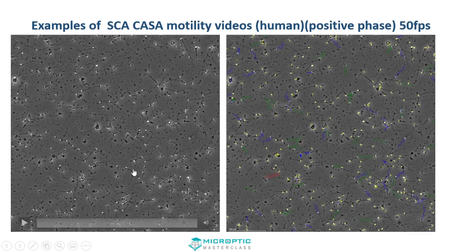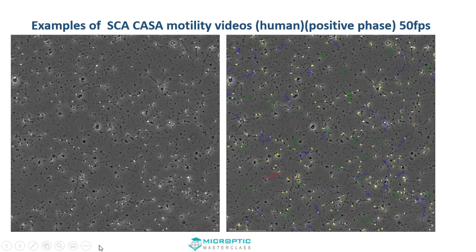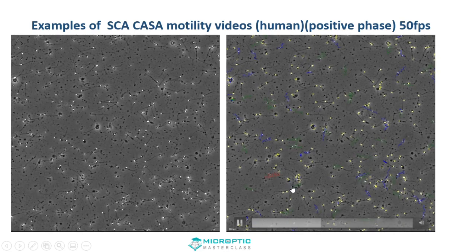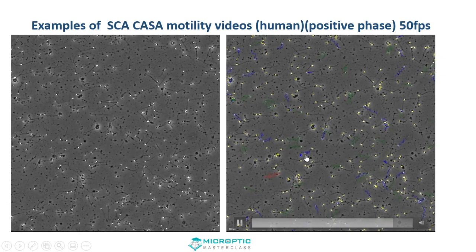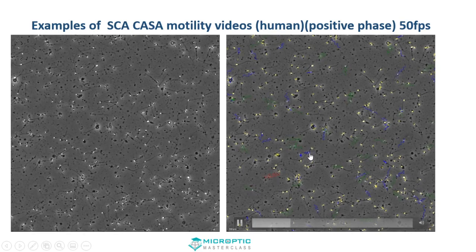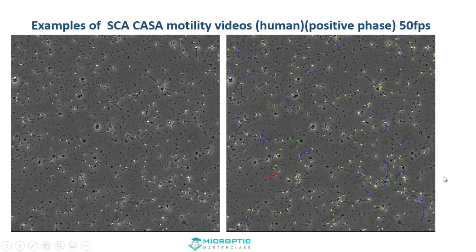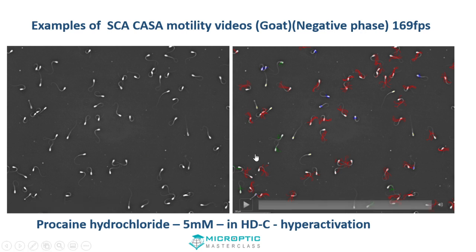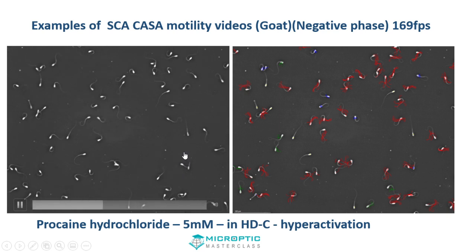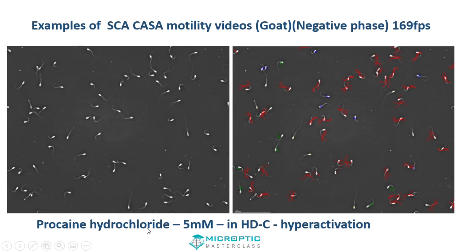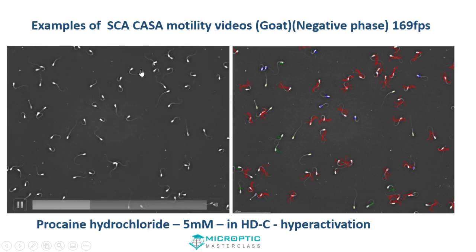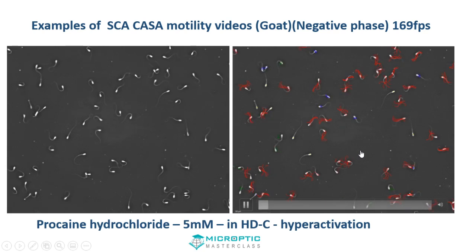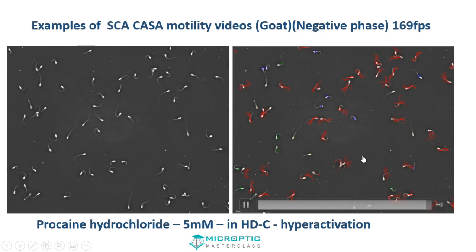Let's first look at motility of human sperm in semen. You can see the sperm swimming in a pretty challenging environment with lots of prostatic particles. This is how the SCA CASA analyzes it — the red sperm is fast progressive, the green one is less progressive and less fast, and the blue one is not really progressive. This is also shown in negative phase contrast, where for example tankwa goat sperm at a high frame rate of 169 frames per second are really hyperactivating in a star-spin pattern. Here you can see how the tracks are reconstructed in the sperm class analyzer with all parameters recreated.